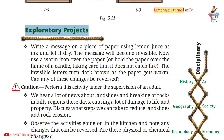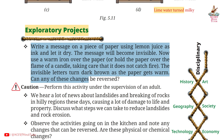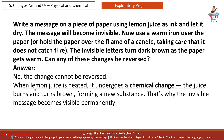Exploratory project: Write a message on a piece of paper using lemon juice as ink and let it dry. The message will become invisible. Now use a warm iron over the paper, or hold the paper over the flame of a candle, taking care that it does not catch fire. The invisible letters turn dark brown as the paper gets warm. Can any of these changes be reversed? Answer: No. When lemon juice is heated, it undergoes a chemical change — the juice burns and turns brown, forming a new substance. That's why the invisible message becomes visible permanently.